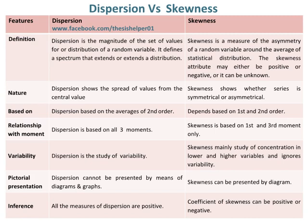Skewness is a measure of the asymmetry of a random variable around the average of a statistical distribution. The skewness attribute may either be positive or negative, or it can be unknown.